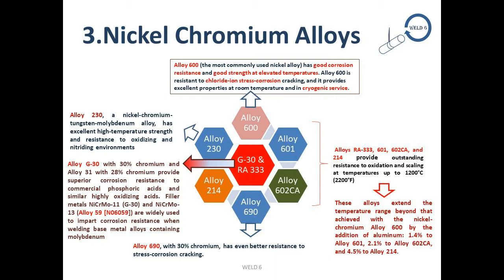Alloy 230, a nickel-chromium-tungsten-molybdenum alloy, has excellent high-temperature strength and resistance to oxidizing and nitriding environments. Alloys Ra333, 601, 602CA and 214 provide outstanding resistance to oxidation and scaling at temperatures up to 1200°C. These alloys extend the temperature range beyond Alloy 600 by the addition of aluminium: 1.4% to Alloy 601, 2.1% to Alloy 602CA, and 4.5% to Alloy 214. Alloy G30 with 30% chromium and Alloy 31 with 28% chromium provide superior corrosion resistance to commercial phosphoric acid and similar highly oxidizing acids.